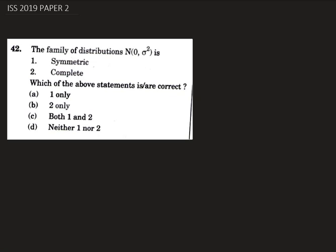Hello, today we are going to solve question number 42 from ISS 2019 paper 2. In this question we are asked whether the family of distribution N(0, σ²) is symmetric and complete.